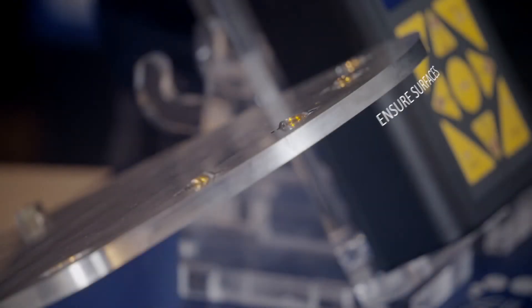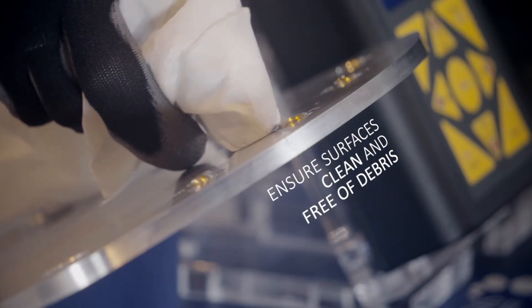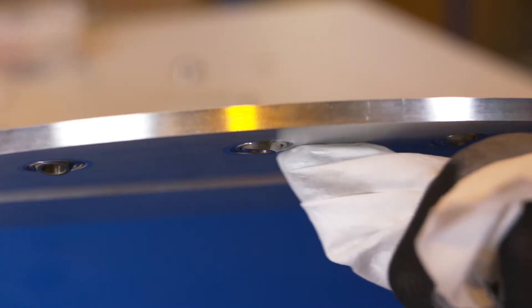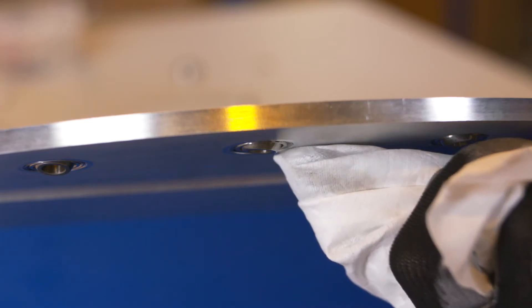Before starting, make sure all the contact surfaces are clean and free of debris. If required, add a light machine oil to the rollers. Refer to your process specification if you're uncertain.